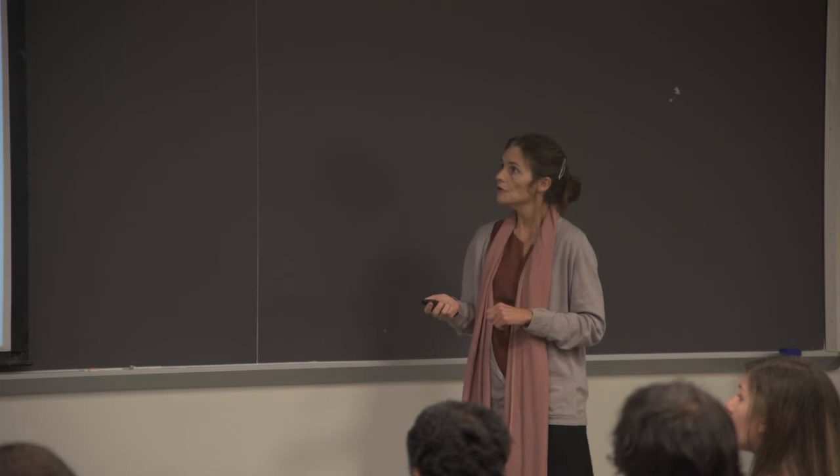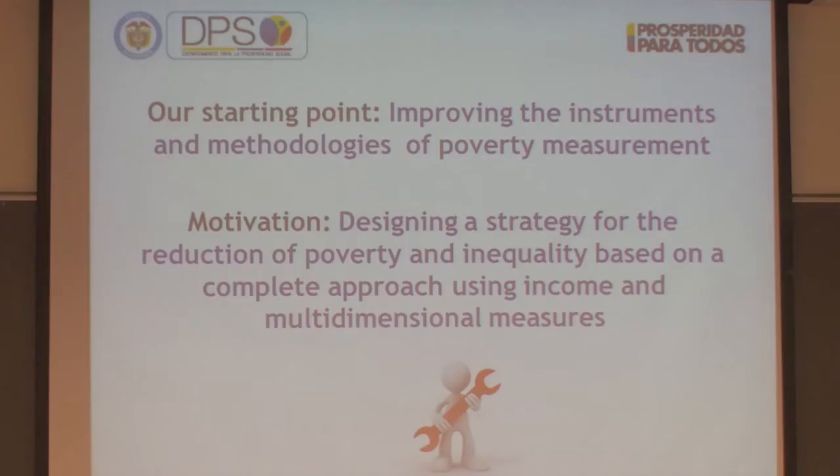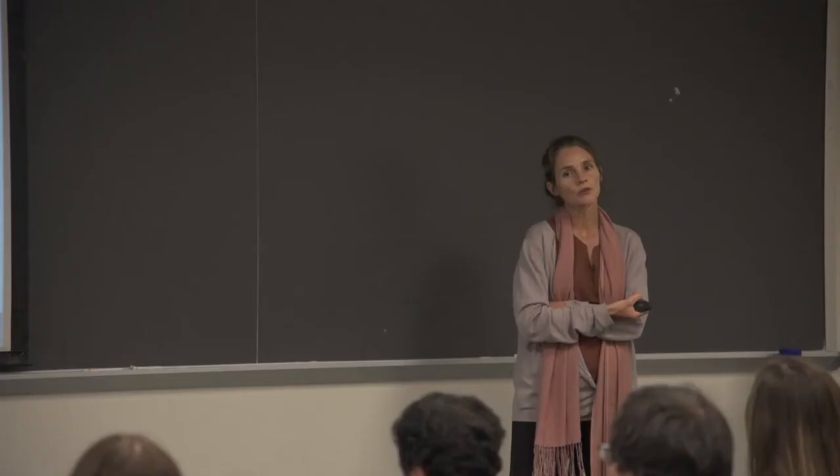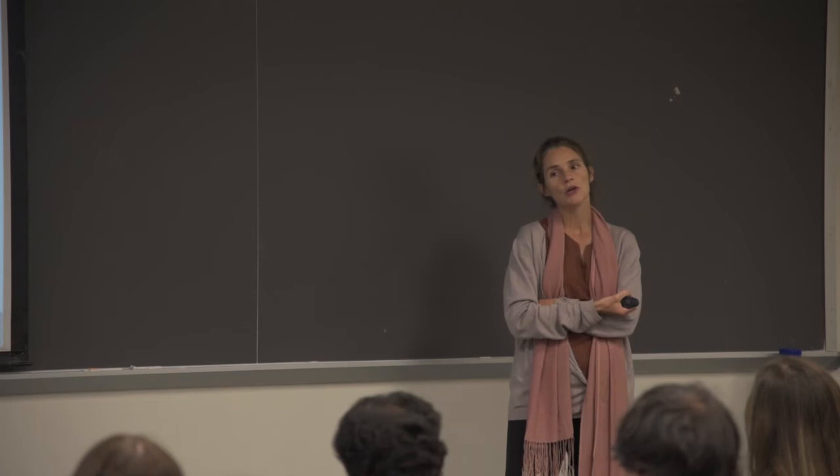It fits the objectives of social policy. The national development plan, in the case of Colombia, was the key document for the MPI. Their starting point was to improve the instruments and methodologies of public measurement. One motivation for Colombia to look at a multidimensional poverty measure was not multidimensional poverty initially — it was income poverty — and they had a problem: the statistics office changed the survey, creating a gap in their income poverty series.